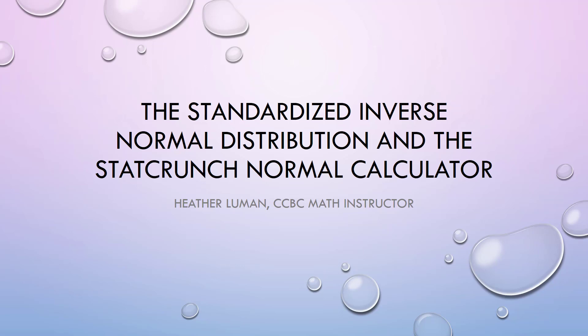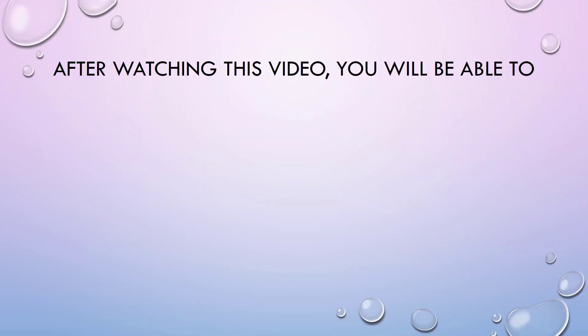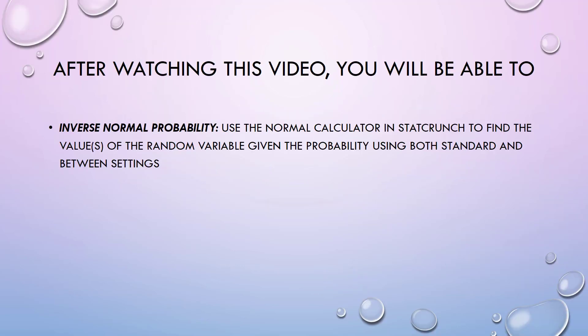Welcome to this video on the standardized inverse normal distribution and the StatCrunch normal calculator. After watching this video you will be able to use the normal calculator in StatCrunch to find the value or values of a random variable given the probability using both standard and between settings, and use the notation Z sub alpha.